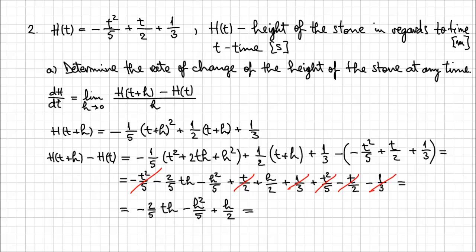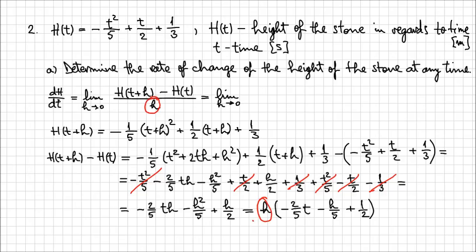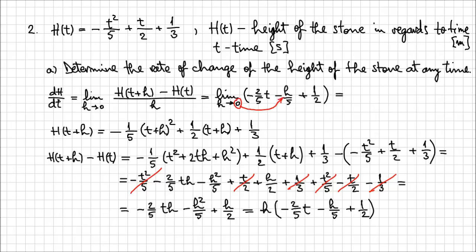In the expression for the rate of change, we need the limit when h approaches 0 of this expression over h. Cancelling h with the h in the denominator, we take the limit when h approaches 0 of minus 2 over 5 t, minus h over 5, plus 1 over 2. Replacing h with 0, the expression becomes minus 2 over 5 t plus 1 over 2. This is the rate of change of the height at any time.